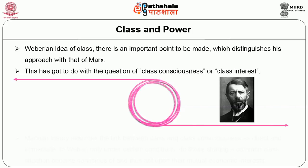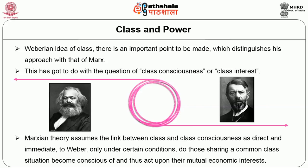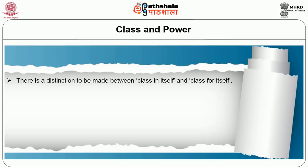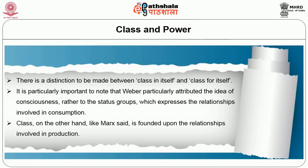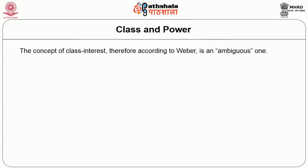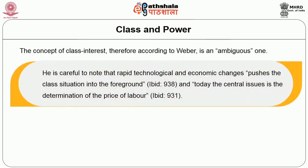For Weber, only under certain conditions do those sharing a common class situation become conscious of, and act upon, their mutual economic interests. Hence there is a distinction between class in itself and class for itself. It is particularly important that Weber attributed the idea of consciousness rather to status groups, which express relationships involved in consumption, whereas class — as Marx said — is founded upon relationships involved in production. The concept of class interest is therefore an ambiguous one. However, Weber notes that rapid technological and economic changes push the class situation to the foreground, with the central issue being the determination of the price of labour.